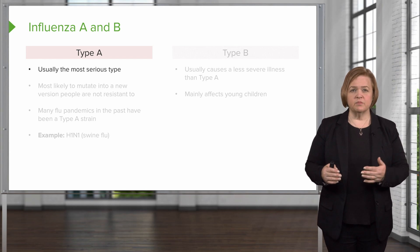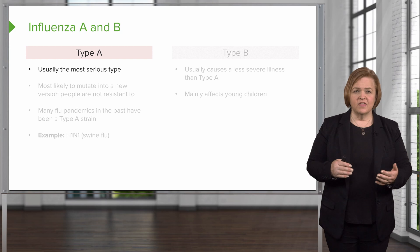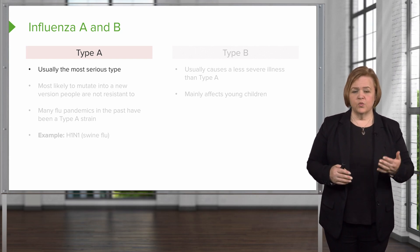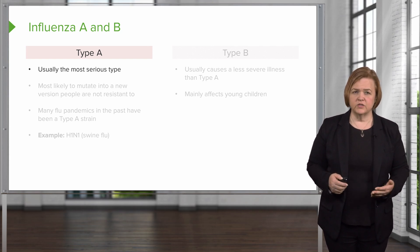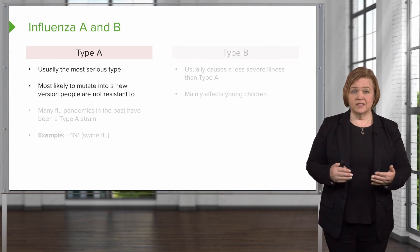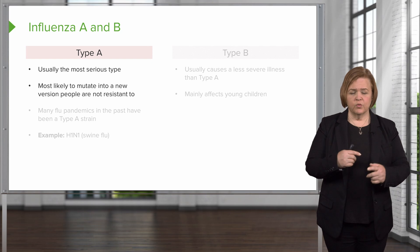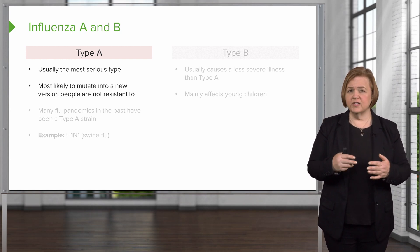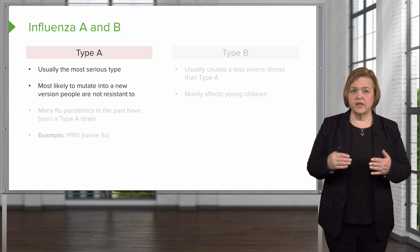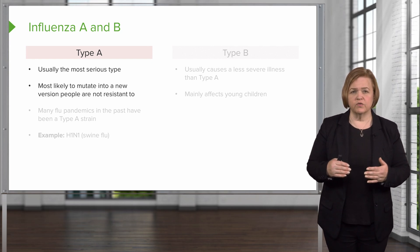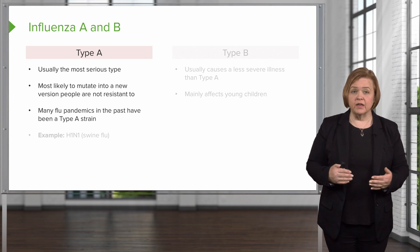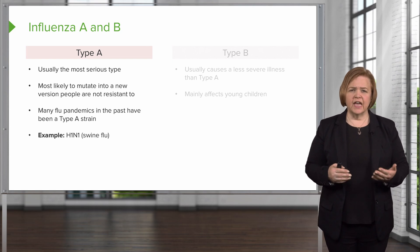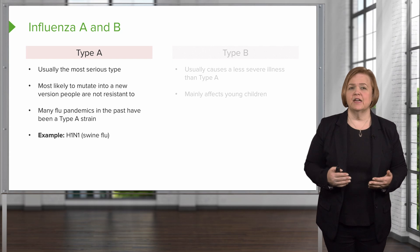Now let's focus on type A and type B — I want you to understand the differences in these two. Type A is usually the most serious. When we think about what type of flu someone is positive for, type A is usually a lot more intense than a type B strain. Type A is most likely to mutate into a new version that people aren't resistant to. Remember when you get the flu vaccine? That's based on what was guessed several months before you received it — they have to make a very educated guess on what influenza strain is going to be active in your region. Type A is most likely to mutate into something you're not resistant to, so many flu pandemics in the past have been the type A strain. H1N1, or the swine flu, is an example of a type A flu virus.